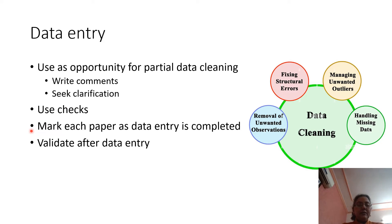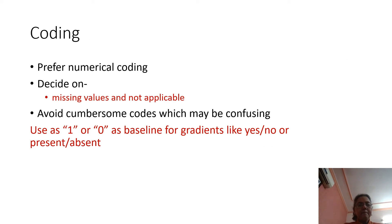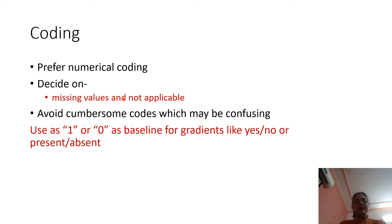When data from a particular form has been entered, it should be marked as completed so we need not enter it again. After entering the data, we can validate it by various means. We can use numerical coding and use numbers like 9, 99, or 999 as symbols for missing values, but we should avoid confusion with actual values — for example, entering 99 in a column depicting age could be confused with a real age.